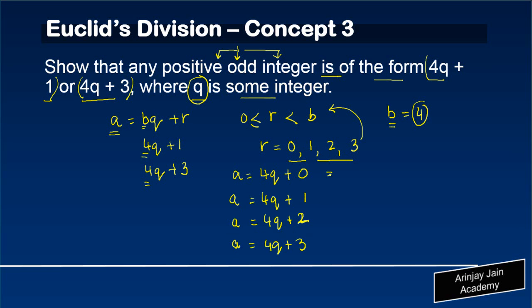But if I simplify, I can write this as 2 into 2q, this remains as it is, this can be further simplified as 2 times 2q plus 1, and this is 4q plus 3.